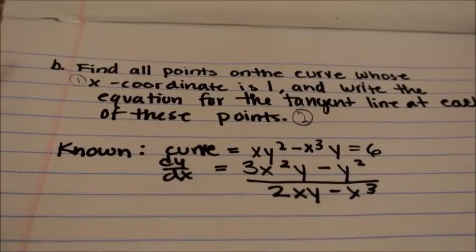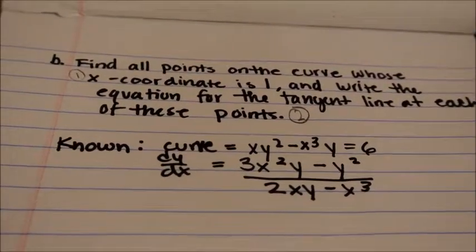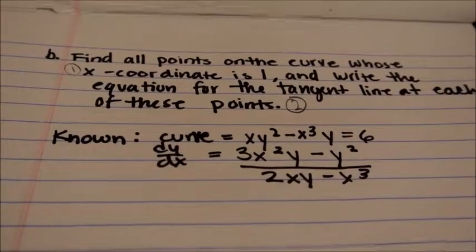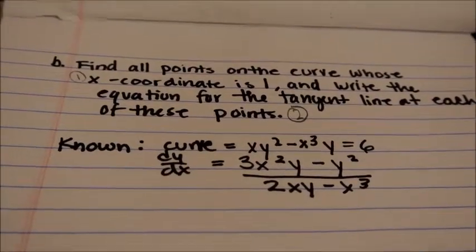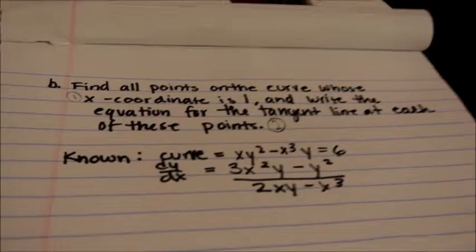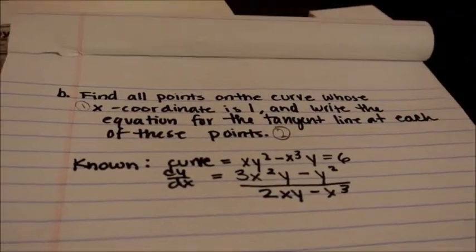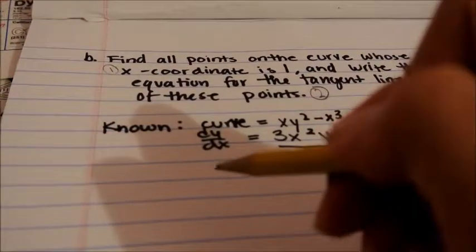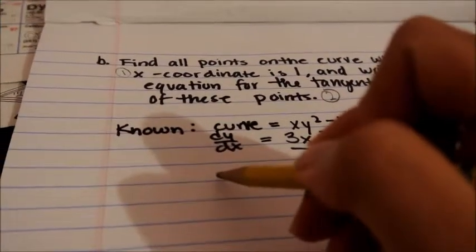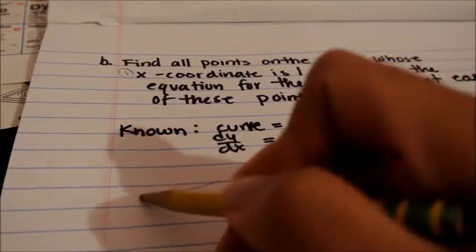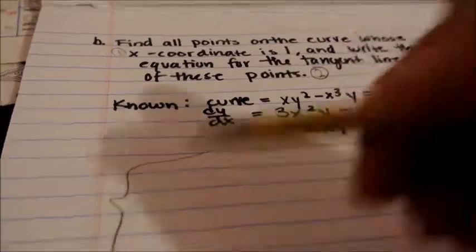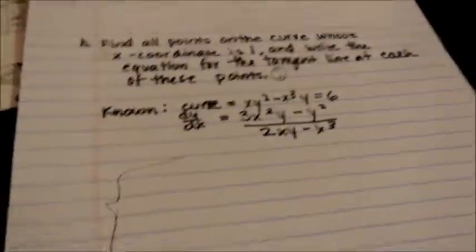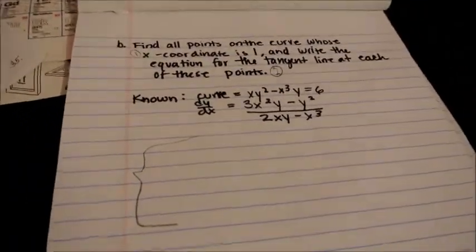So let's start with part 1. Find all points on the curve whose x-coordinate is 1. Since there are two parts to this question, we can simply combine them into one system of equations and work from there.